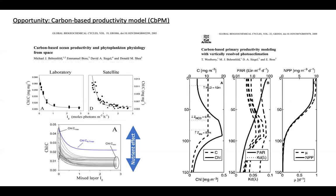That is a simplification of how the model works, and there are two papers you should read if you want to understand more. What I have done here is simplify this model because I no longer need to worry about the vertical structure of phytoplankton biomass — I can get that information from the optical instruments on the floats. So all I need to worry about is that the parameterization of the phytoplankton division rate and the estimates of primary production are accurate enough to apply to the float data.